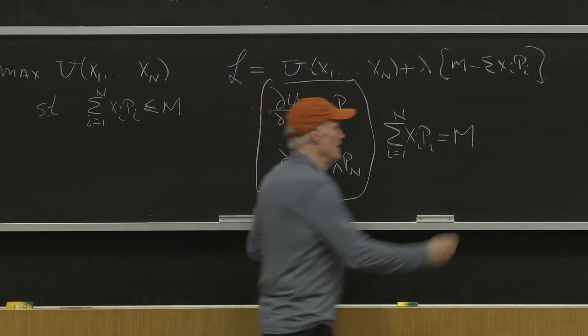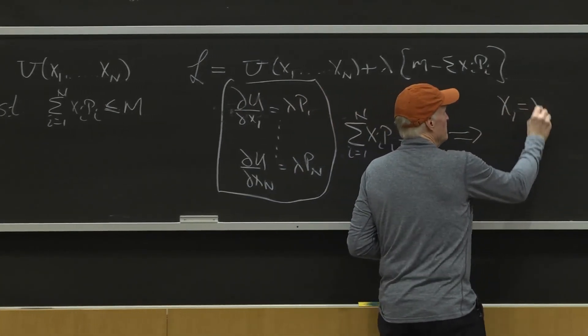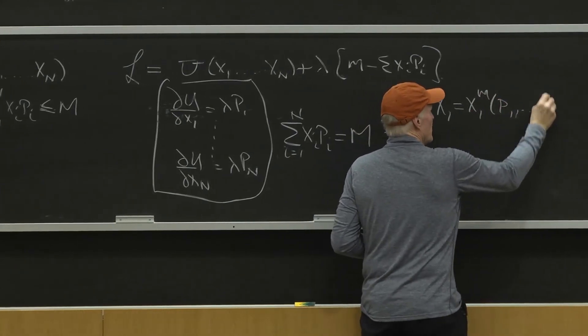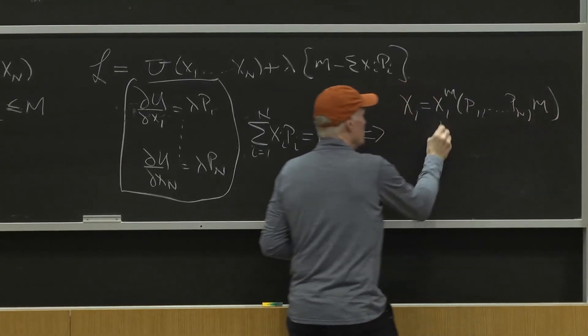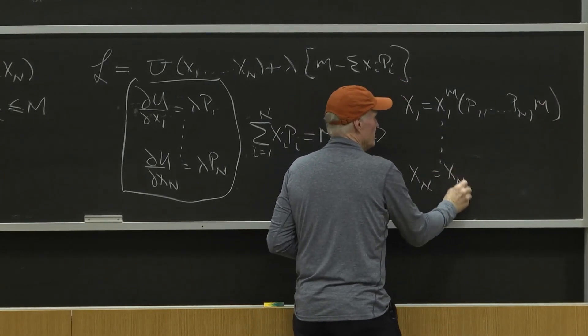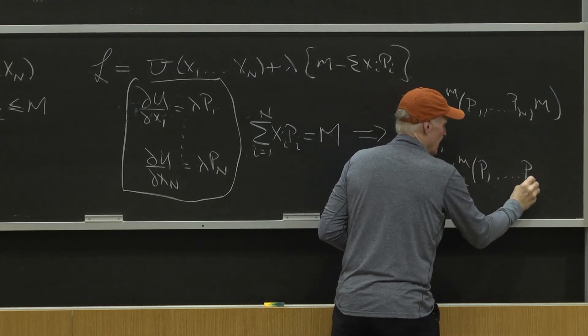get us to those Marshallian demand curves I talked about last time, which express his equilibrium choices as a function of prices and income.